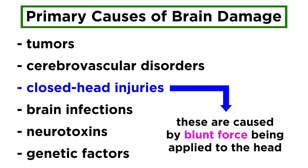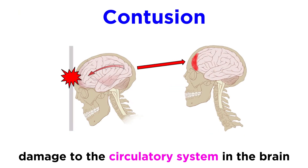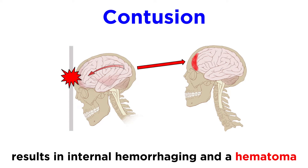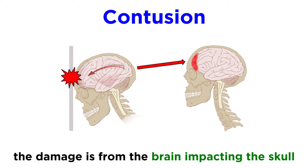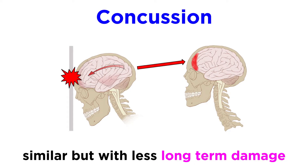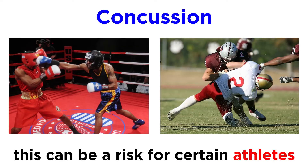Closed head injuries result largely from blunt force being applied to the head. A hard hit can produce a contusion, which involves damage to the circulatory system in the brain, resulting in internal hemorrhaging and a hematoma, which is essentially a bruise, due to the brain forcibly impacting the skull. Concussions are similar, except that there is less long-term damage, but people who experience frequent concussions, like boxers and football players, experience a cumulative effect that eventually results in huge problems.